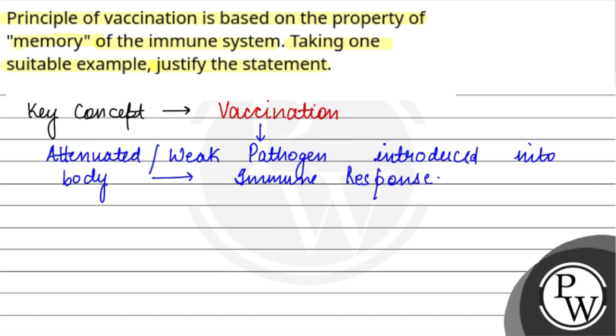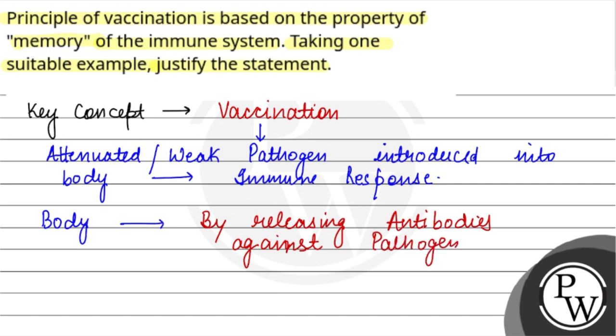Basically, what do we do in vaccination? We call our body to fight against that particular pathogen by releasing antibodies against the pathogen, and also form memory cells which help in forming better attack against that particular pathogen if it ever encounters again. This is the basic property of vaccination.